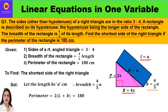Further, they are saying find the shortest side of the right triangle. Which is the shortest side — 3x or 4x? Because the hypotenuse is the longest side, so the shortest side is 3x. We have to find the value of 3x, given that the perimeter of the rectangle is 180 centimeters.